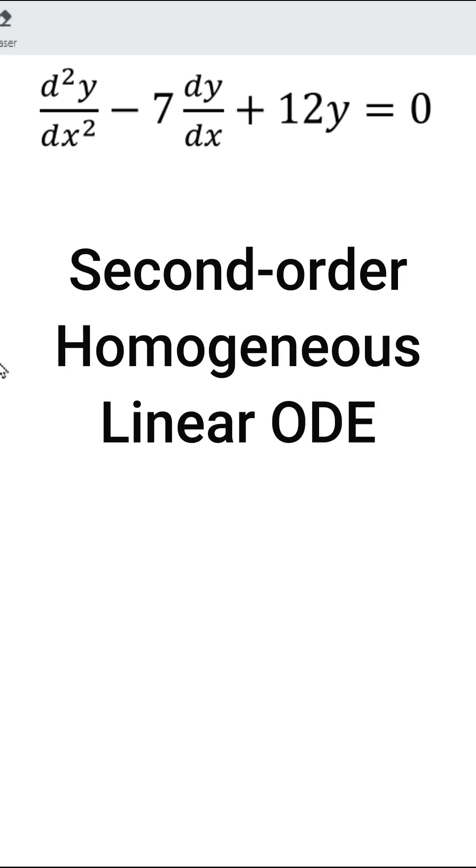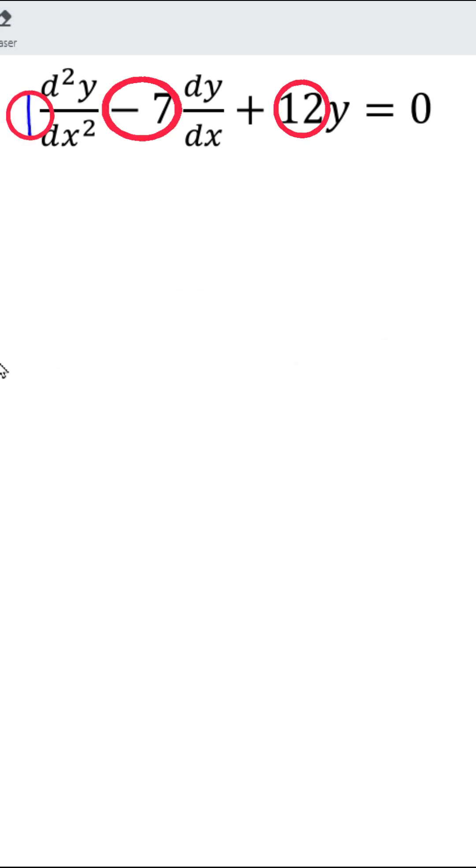To solve this kind of differential equation, first, take out all the constants that we have. There are 1, negative 7, and positive 12.